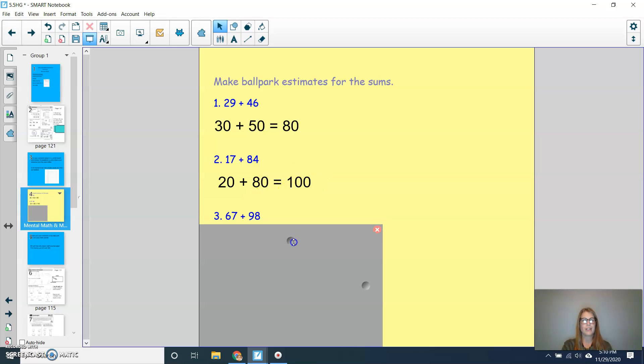Let's try another one. Can you round 67 plus 98? Press pause and play to check. So 67, we would know would round to 70. 98 is going to round to 100. 70 plus 100 equals 170.